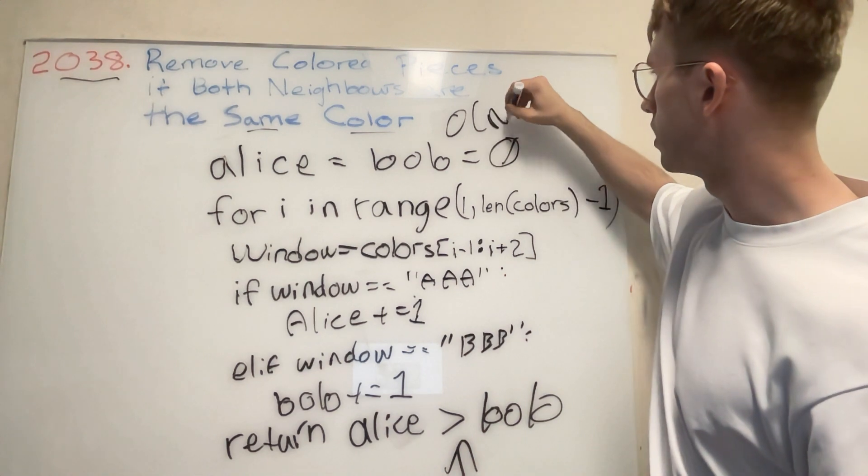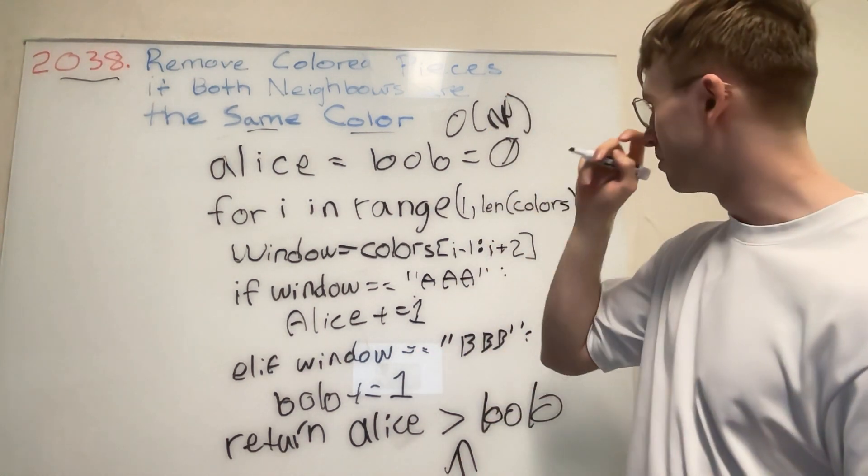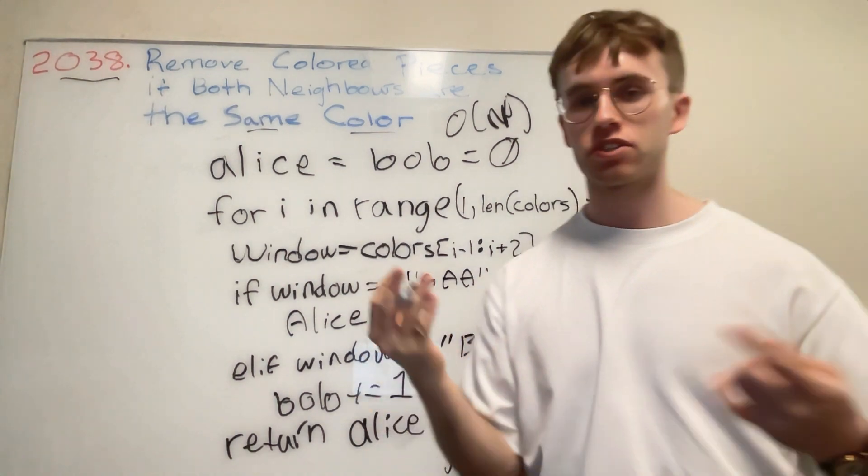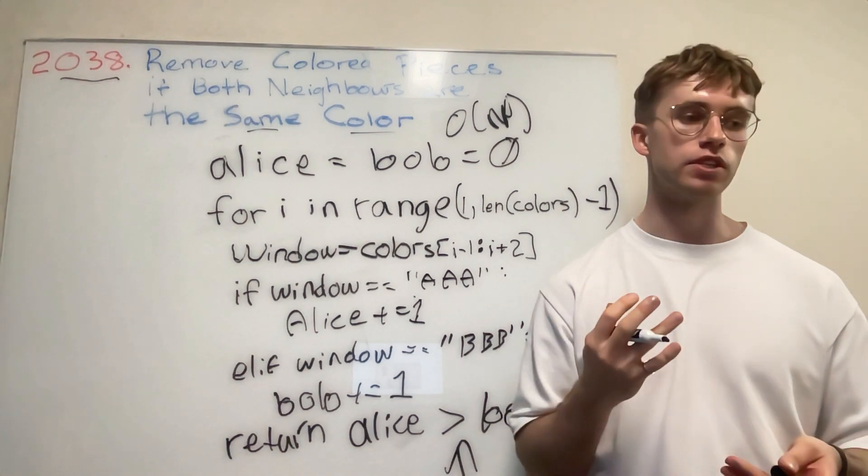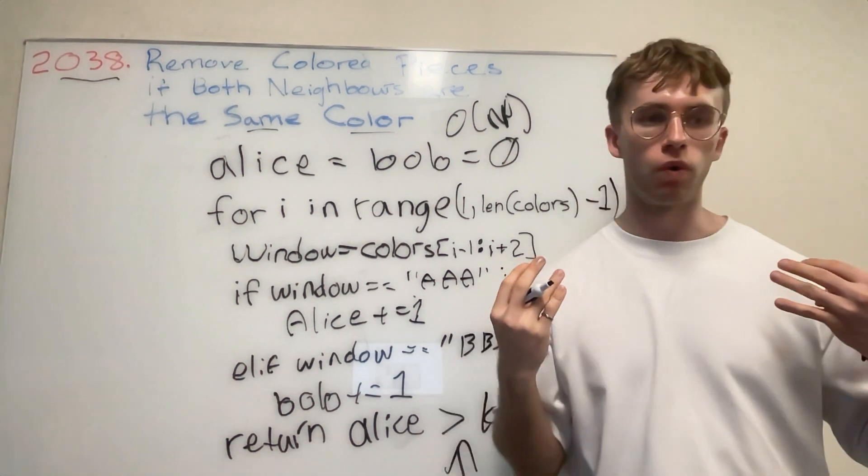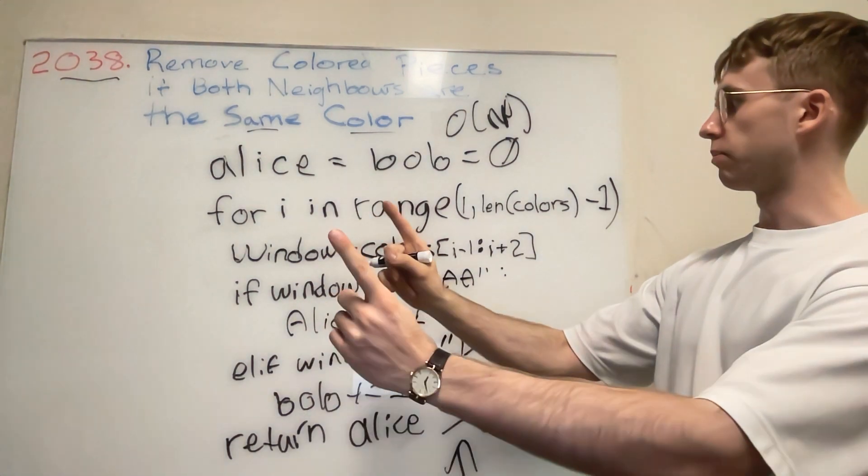But basically this runs in O(n) time complexity. And then for space complexity, that's going to be constant space because we're not using any extra data structures. We're not using say a hash map or an additional array, we're simply just sliding our pointers along here.